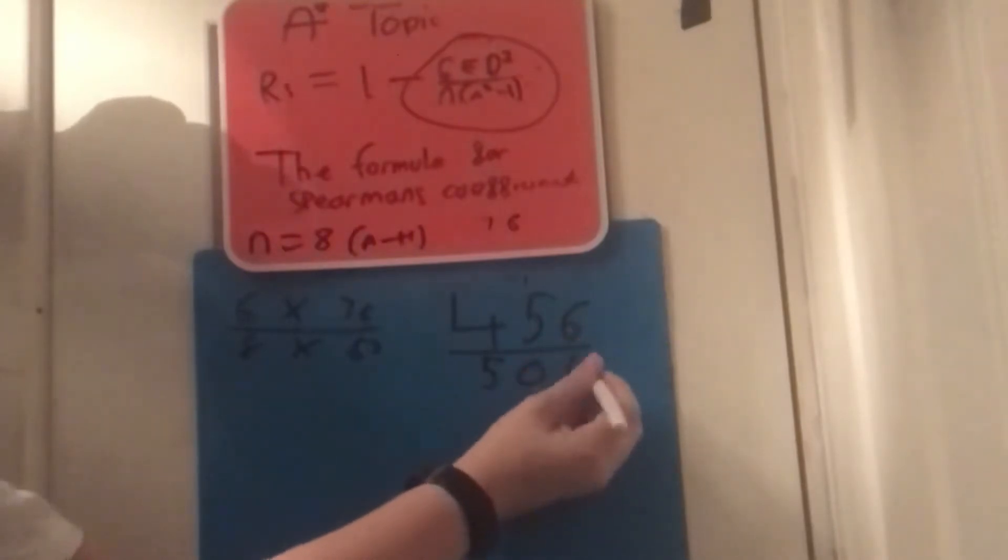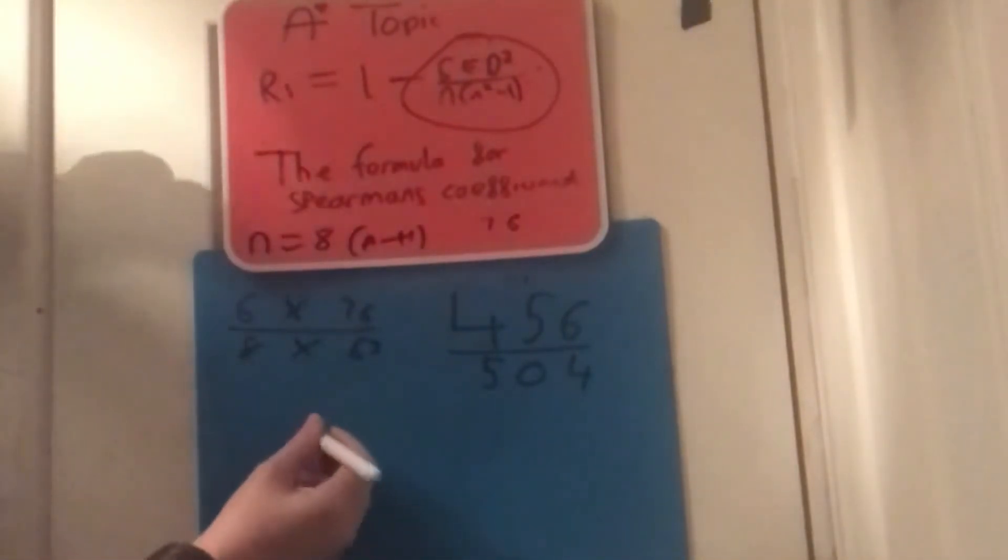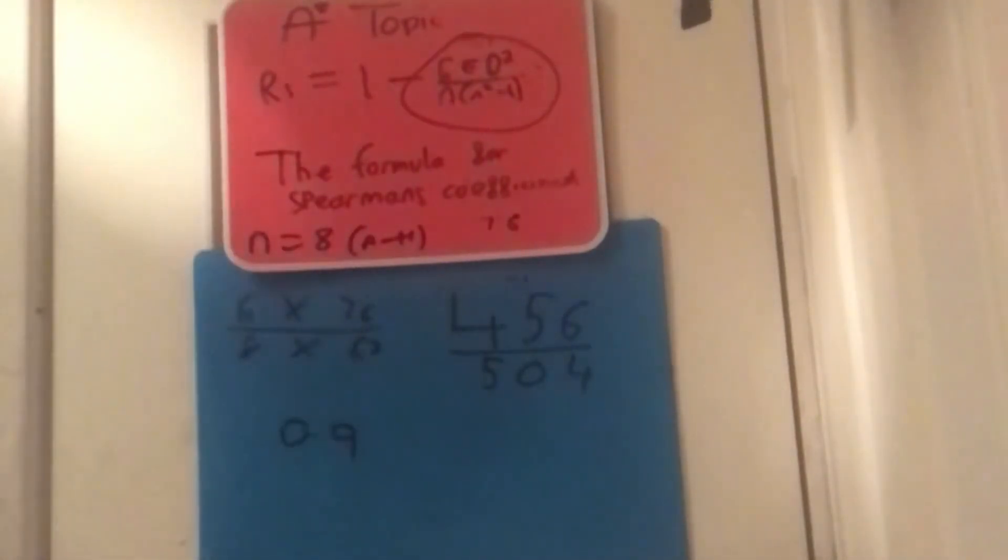And then we divide them. 456 divided by 504. The answer is about 0.9047. Right. So it's 0.9. Right. 0.9, or 0.90 if you want to do 2 decimal places, or 0.905 if you want to do 3 decimal places.